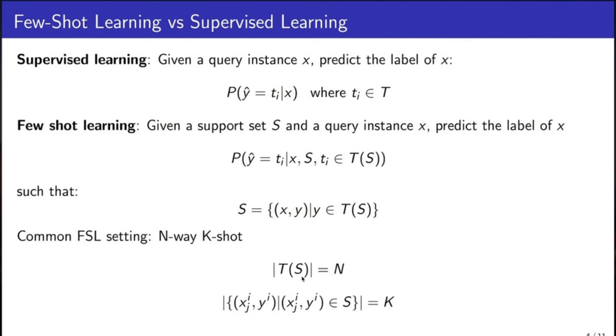In which N is the number of classes and K is the number of instances per class. The event detection model has to predict the label for the query instance x, with regard to the set of labels in the support set.